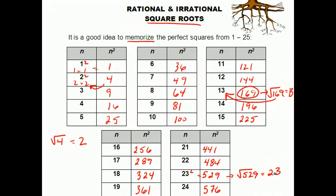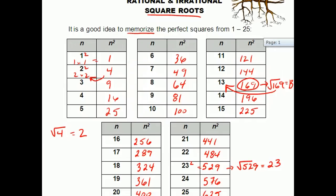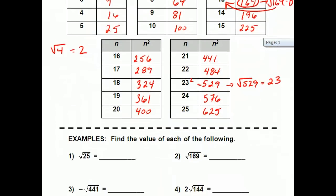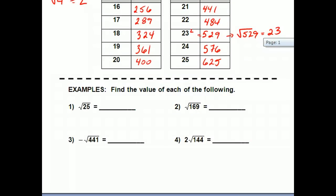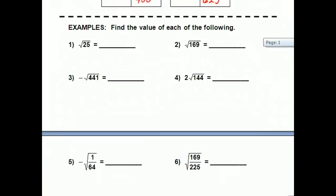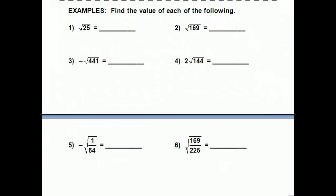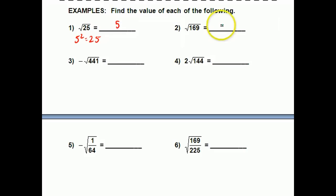That's all fine and dandy when you've got a perfect square that you're dealing with. That's called a rational square root. Here are some examples of those — these ones work out nice and neat. The square root of 25: well, 5 squared gives me 25, so the square root of 25 must be 5. For 169, 13 squared gives me 169, so the square root of 169 must be 13.